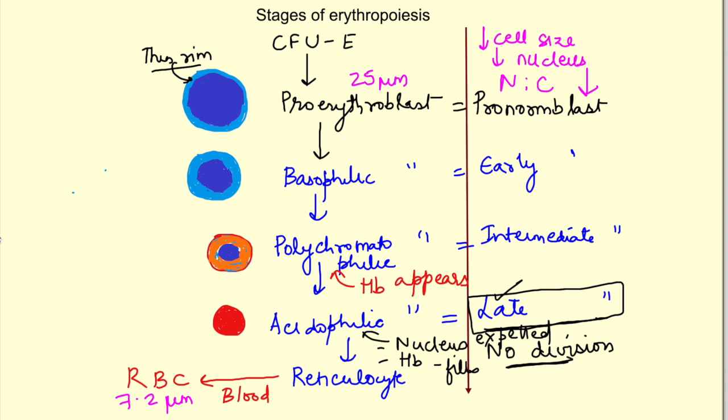Then comes the reticulocyte. In reticulocyte there are only remnants of RNA present as the nucleus has been thrown out, and these remnants of RNA form a reticulum in the cell, hence the name reticulocyte. It is the reticulocyte stage which enters into circulation and matures into RBC in one to two days. These RBCs become biconcave in shape.